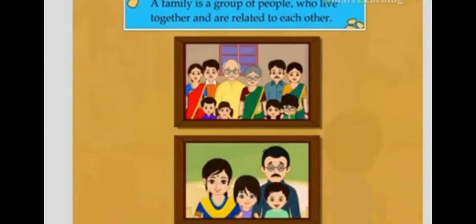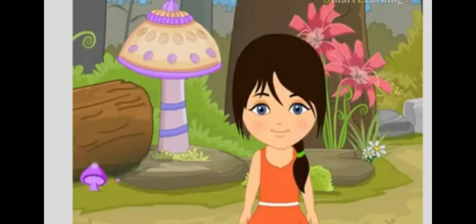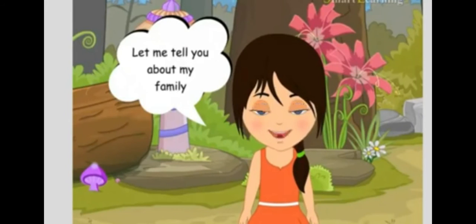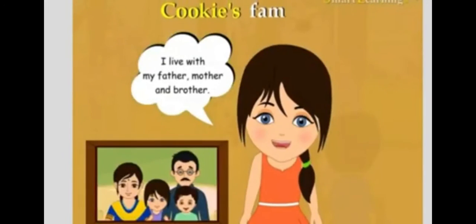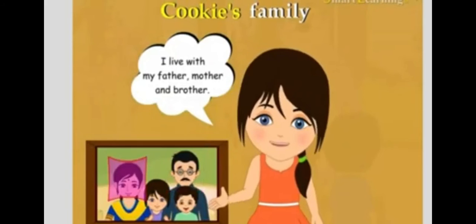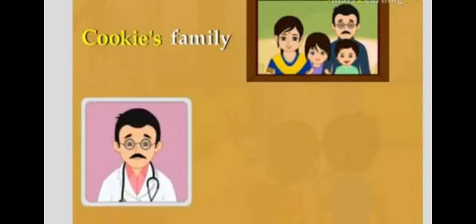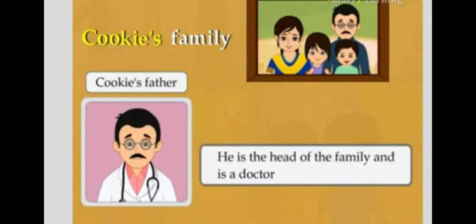A family is a group of people who live together and are related to each other. Let me tell you about my family, says Cookie. I live with my father, mother, and brother. This man is Cookie's father. He is the head of the family and is a doctor. His name is Mr. John Smith.